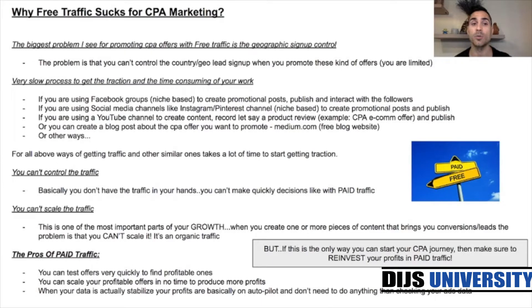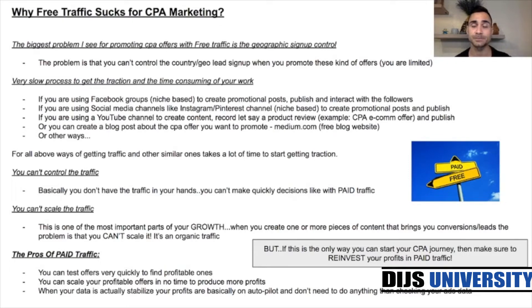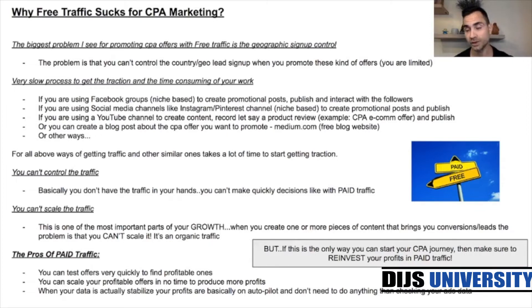The first and biggest problem I see with promoting CPA offers using free traffic is geographic signup control. You can't control the country or geo of lead signups when you promote these kinds of offers. For example, if you have an offer targeting Australia, you can't just create a post on a blog, YouTube video, or social media channel, because your followers are from all over the world. That means you're sending bad traffic to the advertiser, and when they check the quality of your leads, there's going to be a problem.